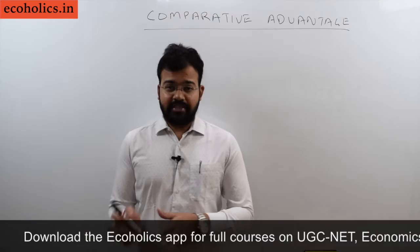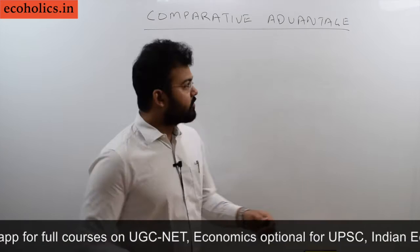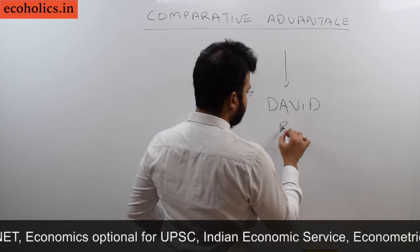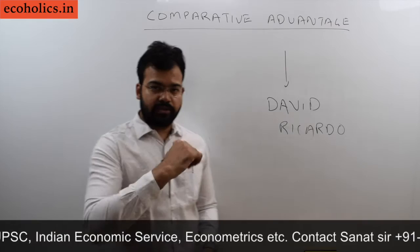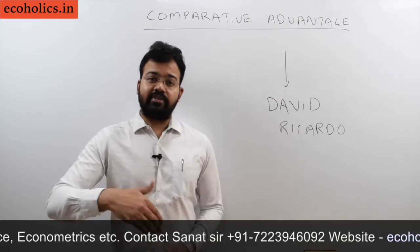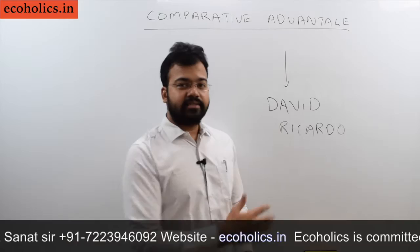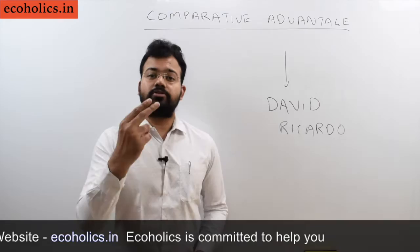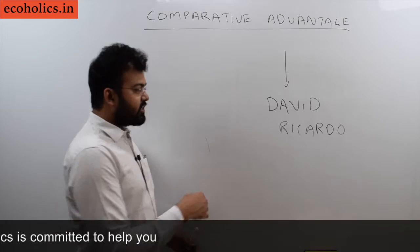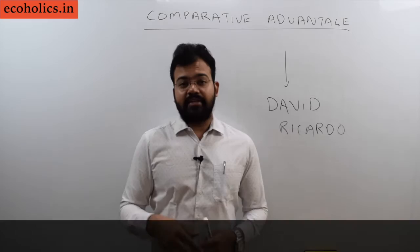In comparative advantage theory, this theory was given by David Ricardo. If you remember the absolute advantage theory, there was a saying that if a country is having the absolute advantage, then only they can engage in trade. But what Ricardo said is that if a country is not having the absolute advantage in both the commodities, there is still a possibility for international trade. We will see that if a country is not having the absolute advantage in both commodities, then also the trade can be favorable.